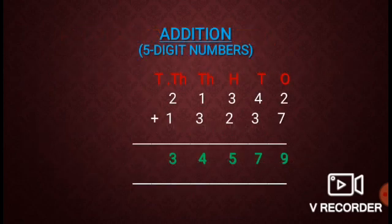Addition of 5-digit numbers. Here we have places: ones, tens, hundreds, thousands, ten thousands. First we arrange the digits of the addends at the various places. The addends we have are 21,342 and 13,237. Now start adding from the ones place: 2 + 7 = 9, then tens: 4 + 3 = 7, then hundreds: 3 + 2 = 5, then thousands: 1 + 3 = 4, then ten thousands: 2 + 1 = 3. So the sum is 34,579.